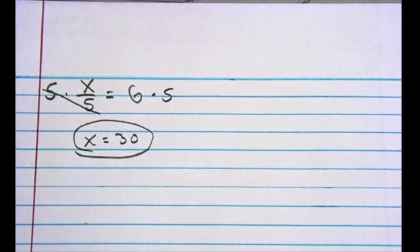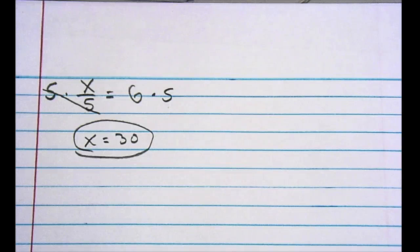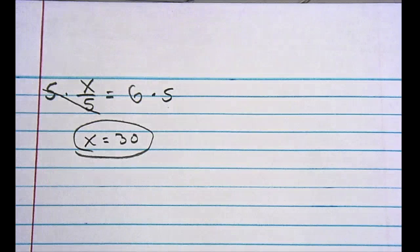Whenever I do one-step or two-step equations, I'm always trying to end up with just a variable like x or n on one side of the equation by itself. That's the goal for these types of problems. Let's do a couple more.